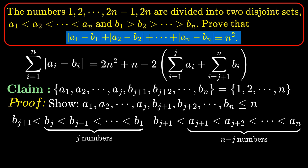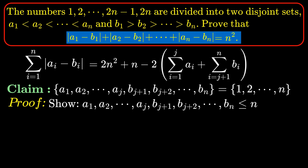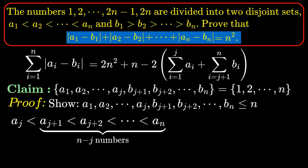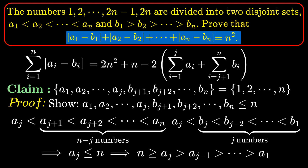Focus on b_{j+1}: it is less than b_j, b_{j-1}, up to b_1, so it is less than j numbers. It is also less than a_{j+1}, a_{j+2}, up to a_n, which gives n minus j numbers greater than b_{j+1}. So altogether there are n distinct numbers larger than b_{j+1}, which implies b_{j+1} ≤ n since all numbers are between 1 and 2n. This automatically implies that b_{j+1}, b_{j+2}, up to b_n are all ≤ n. Similarly, a_j is less than a_{j+1}, ..., a_n and also less than b_j, b_{j-1}, ..., b_1,